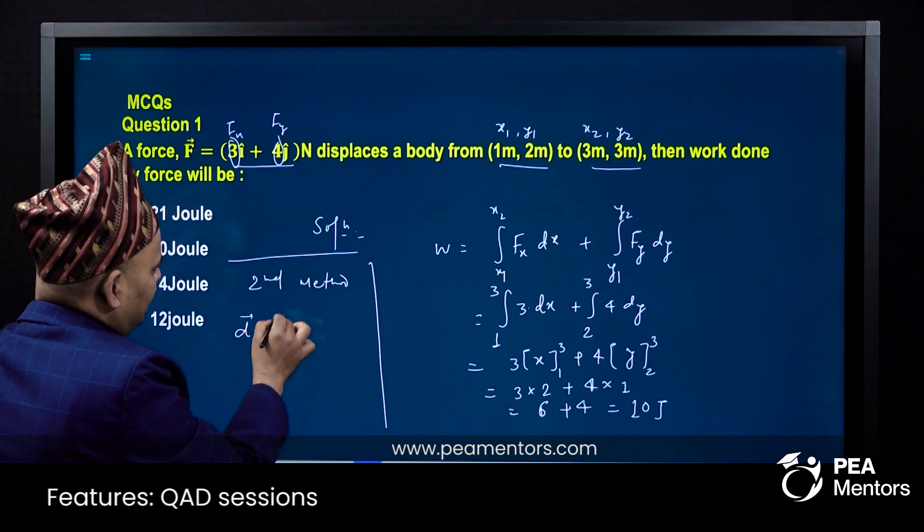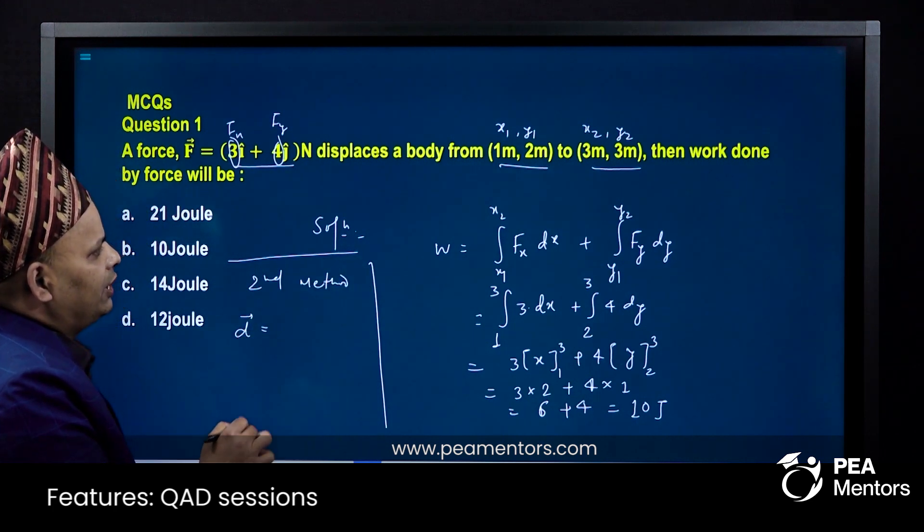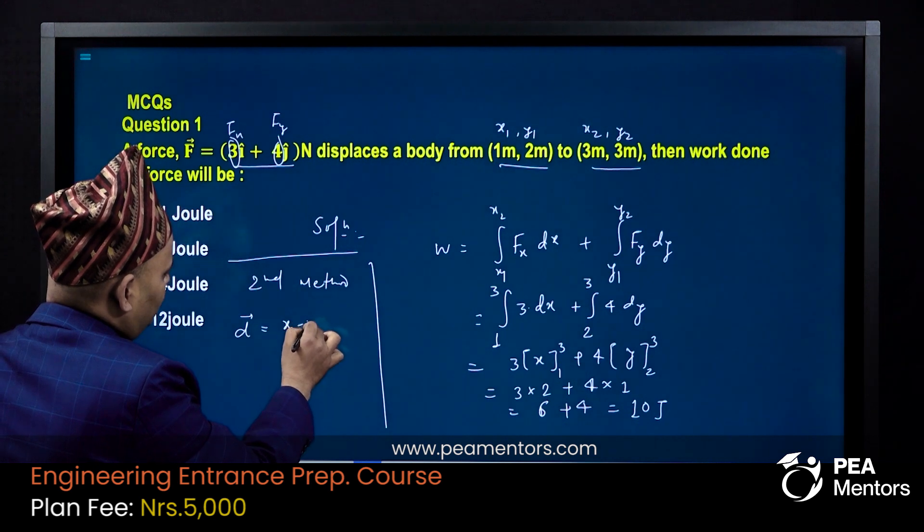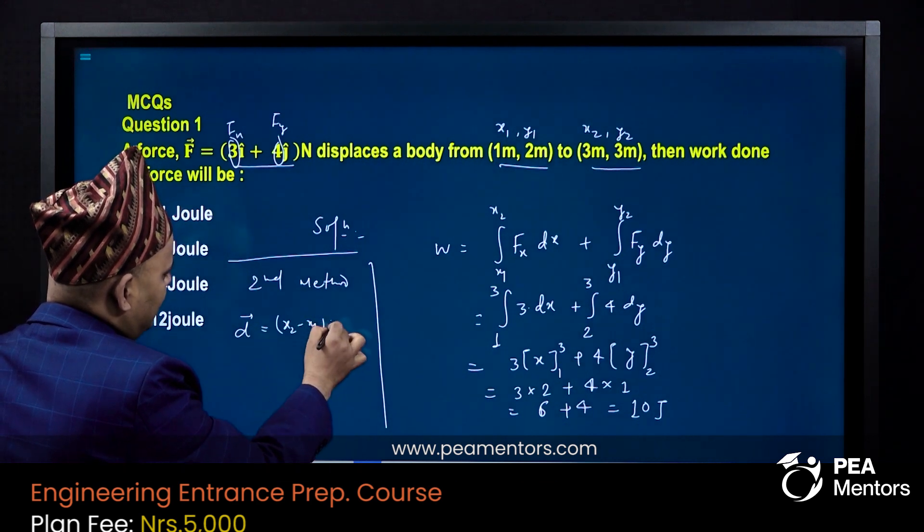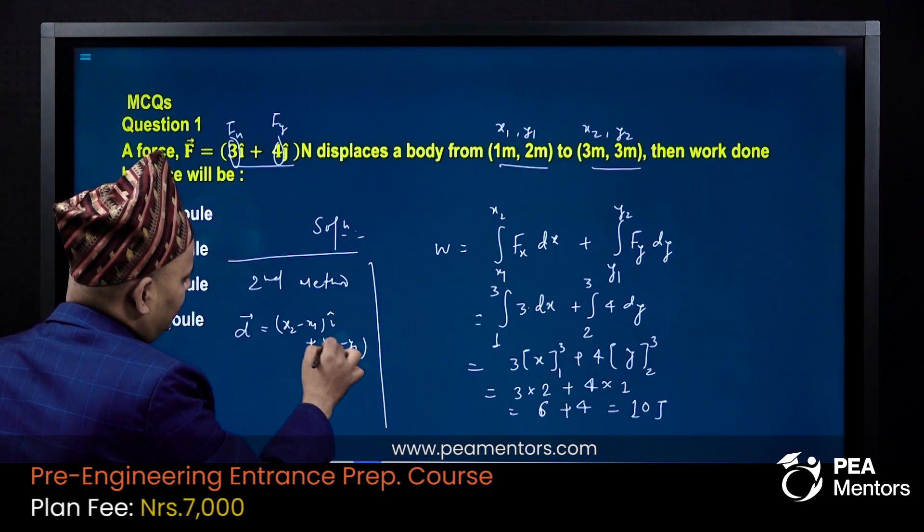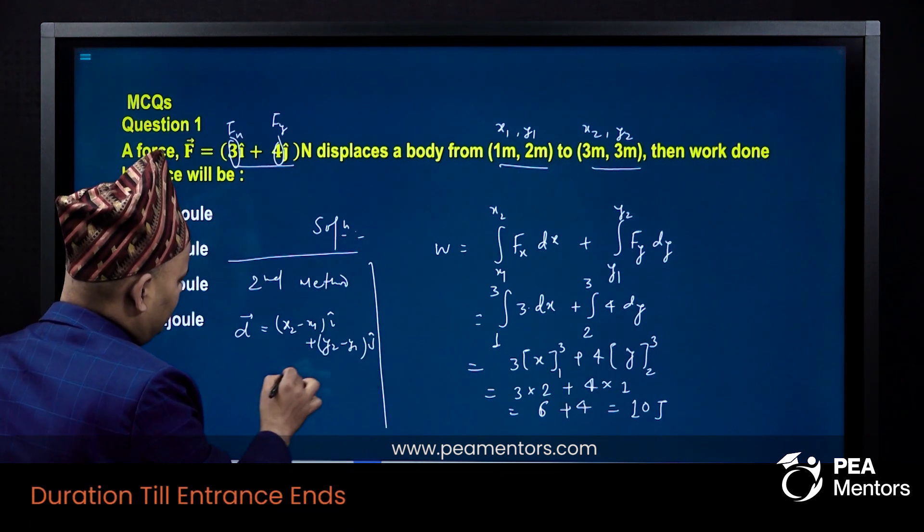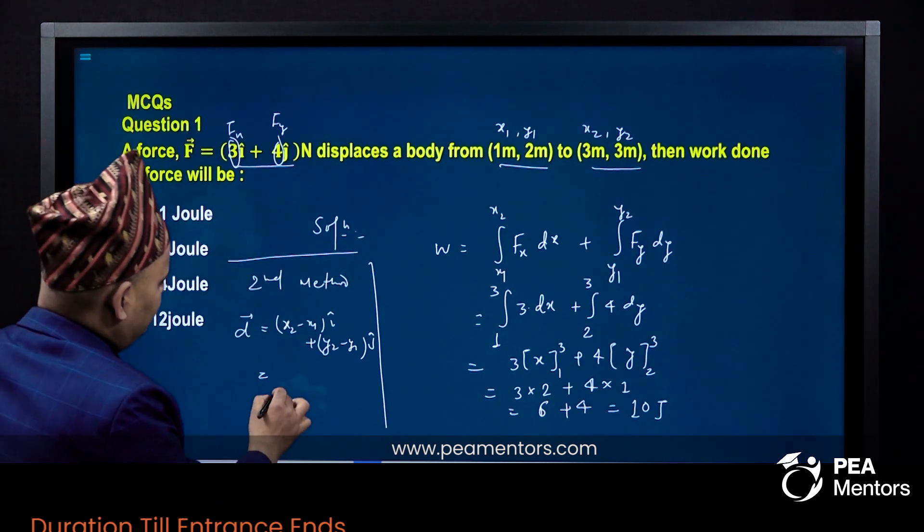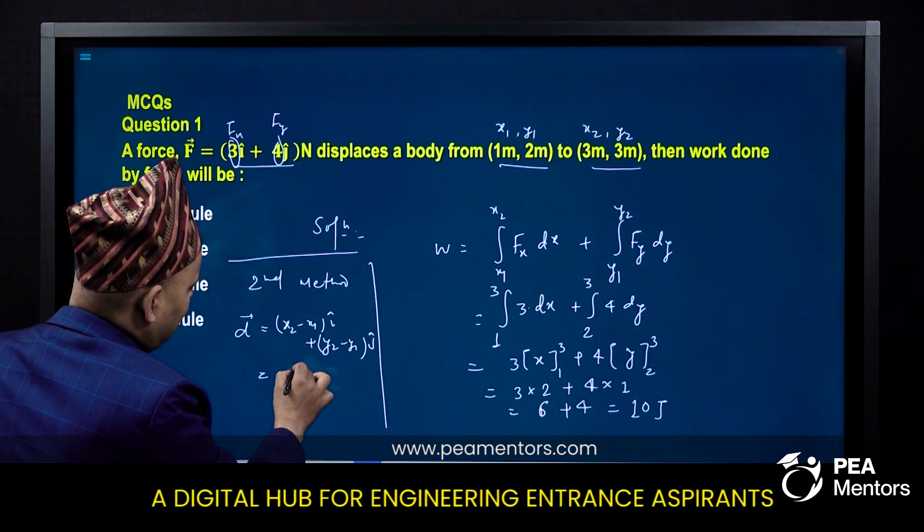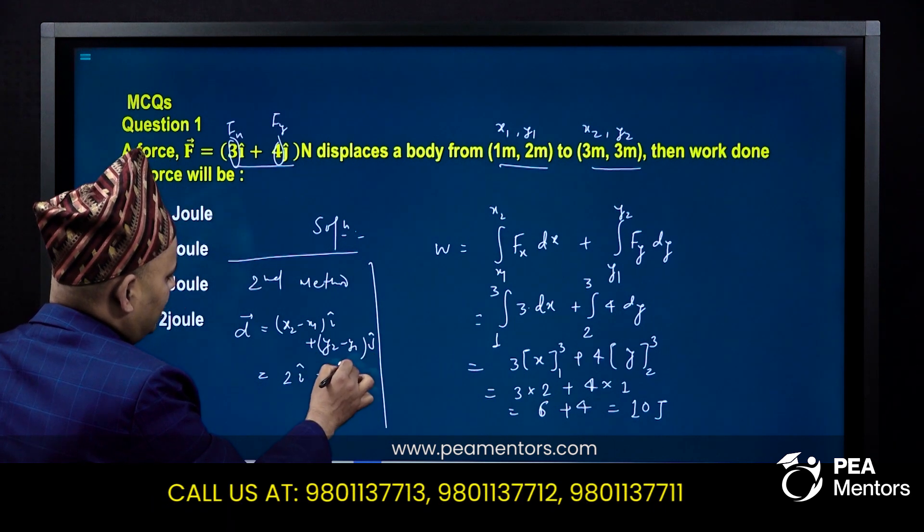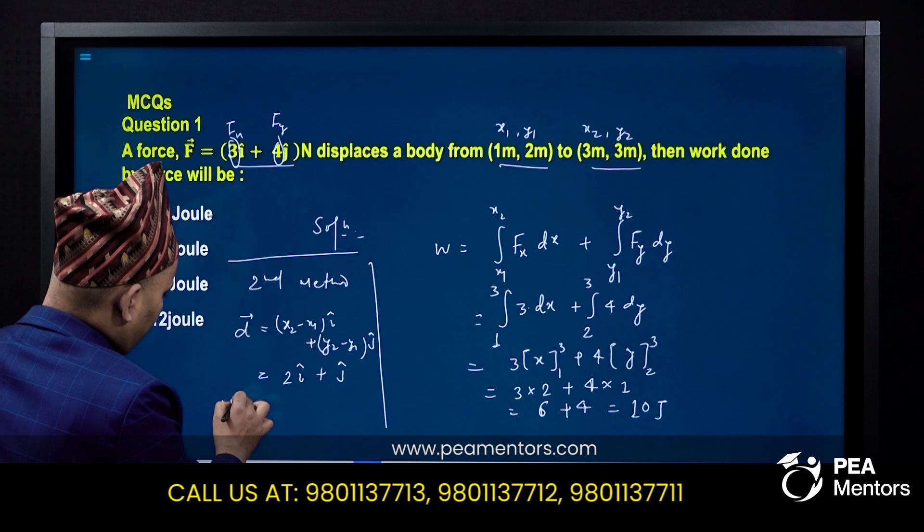In this method, let me find the displacement value d. From x1, y1 to x2, y2, displacement is (x2 minus x1) into i cap plus (y2 minus y1) into j cap. So this becomes 2i cap plus (3 minus 2), that is 1j cap.